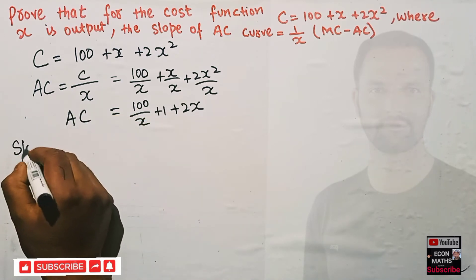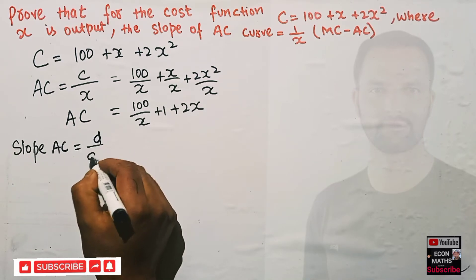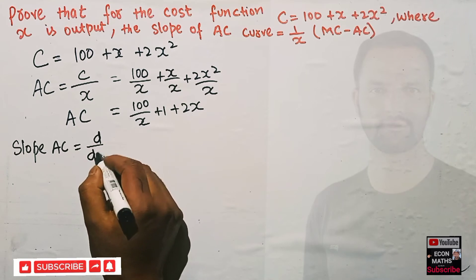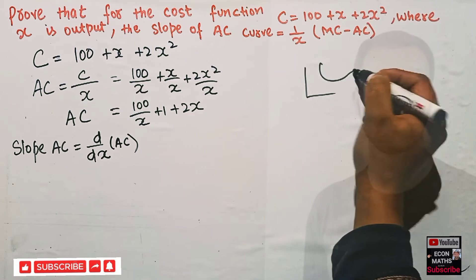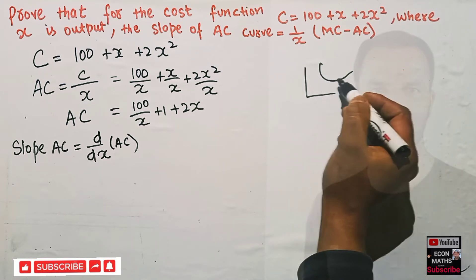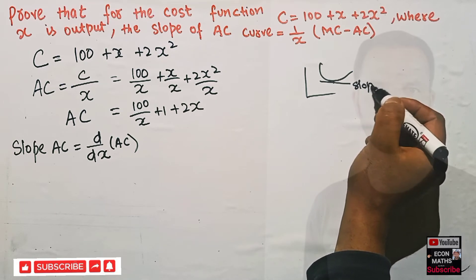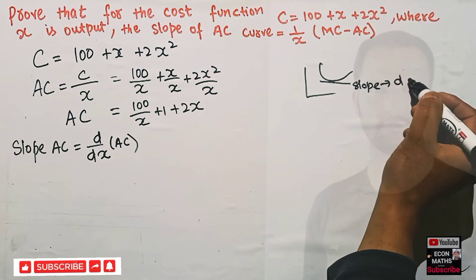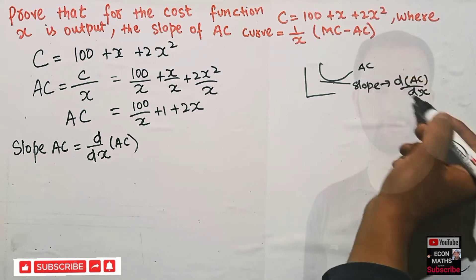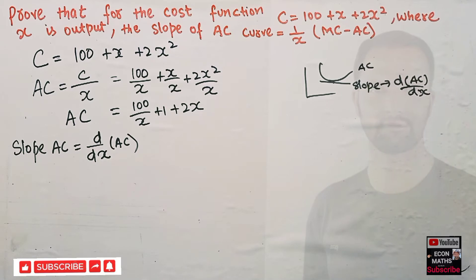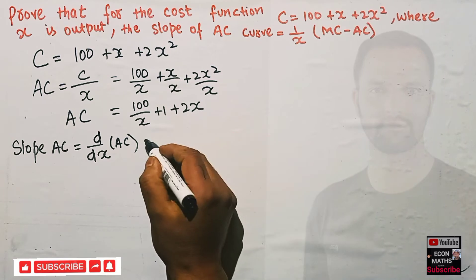The slope of AC means we need to take the derivative of the average cost with respect to x. The slope is given by d(AC)/dx — taking the derivative of average cost with respect to x gives us the slope.